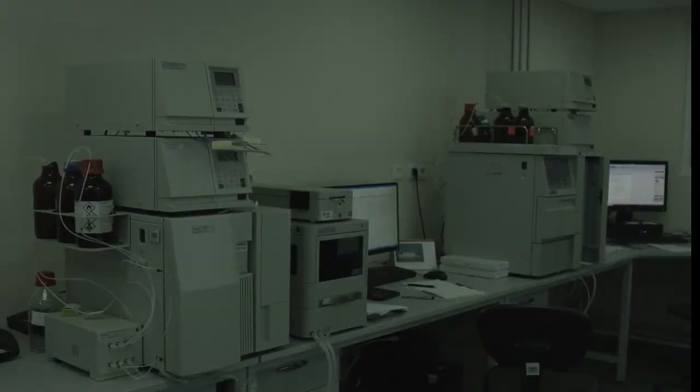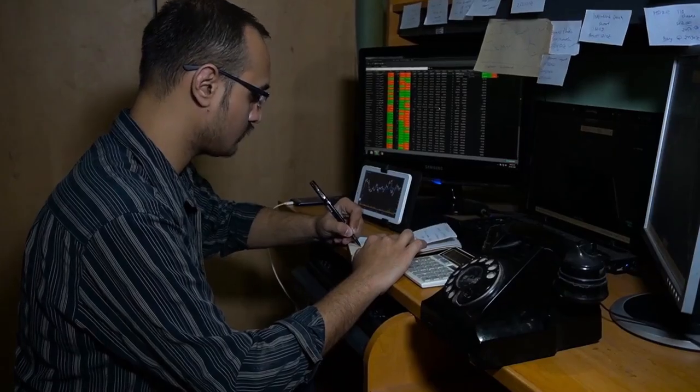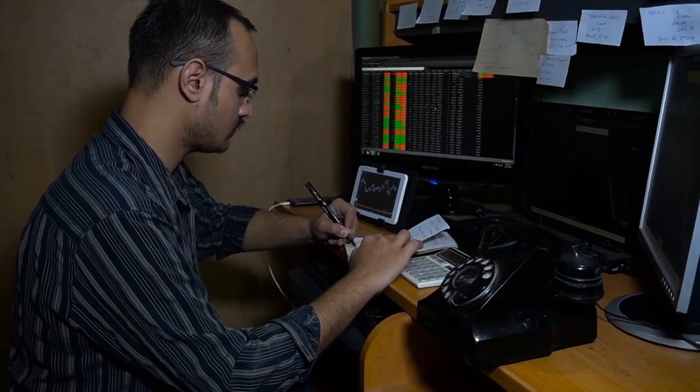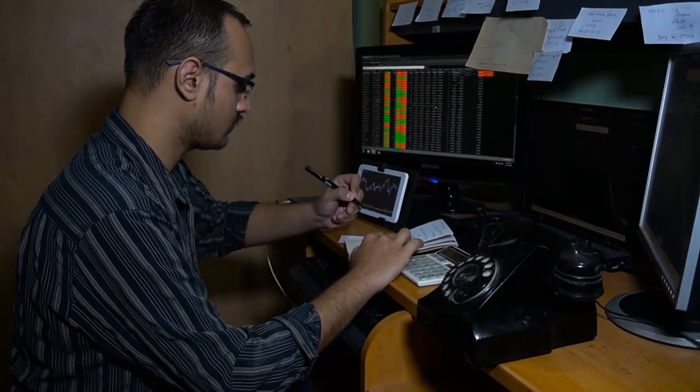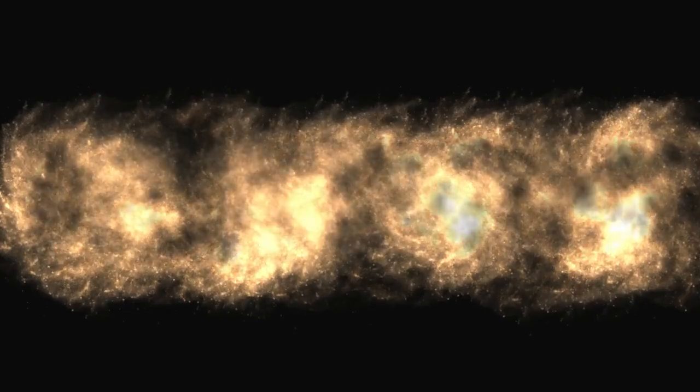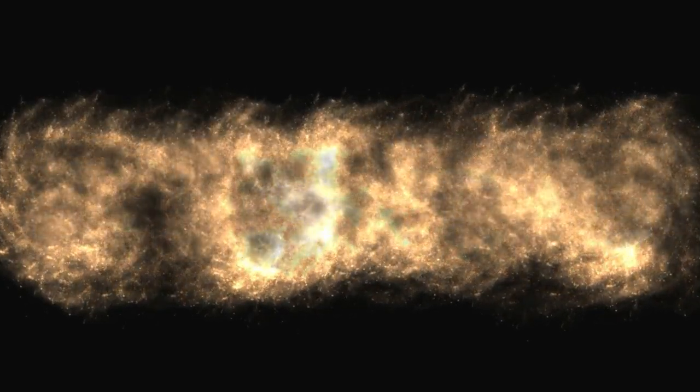Everyone expected Webb to find a quiet, empty stretch of sky. Instead, staring back from the darkness was something that should not have been there. A galaxy, fully formed. Not a blur or a hazy blob, but a complex rotating system of stars, complete with spiral arms and even a monstrous black hole at its heart. Not just present, thriving.